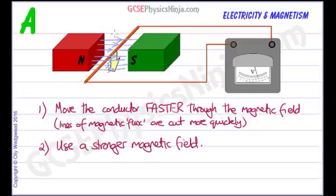And of course, if you move the conductor through that, then you're going to cut much more per second. So using a stronger magnetic field increases the rate at which the magnetic flux lines are cut, same thing.